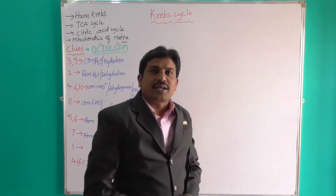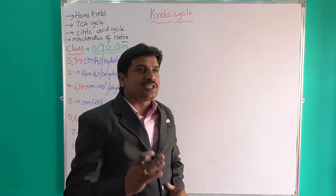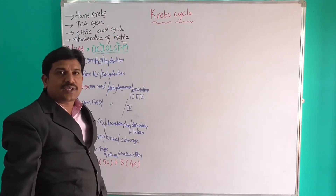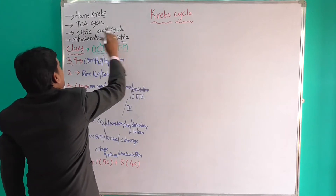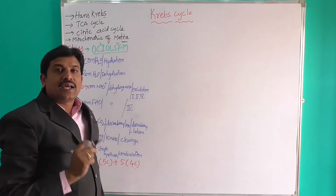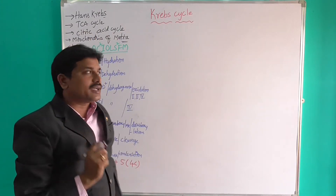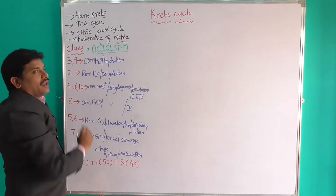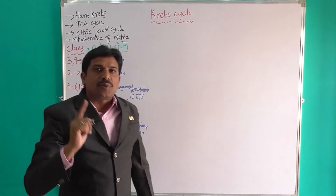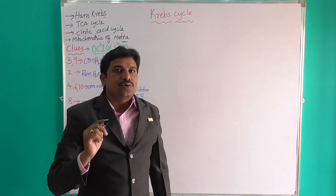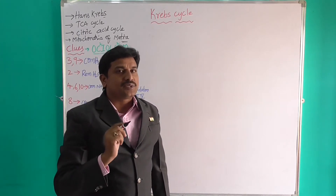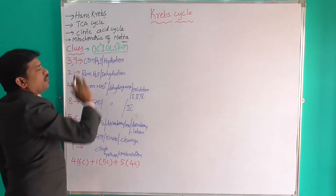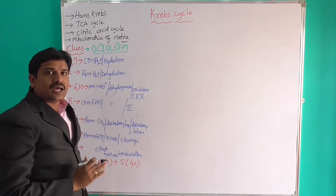Let us discuss the Krebs cycle. This cycle was proposed by Hans Krebs, so it is called the Krebs cycle. This cycle is also called the TCA cycle, that is Tricarboxylic Acid cycle. It is also called the Citric Acid cycle, because the first stable product is citric acid. This cycle occurs in the mitochondria matrix.